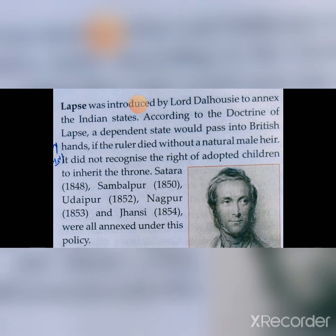Satara, Sambalpur, Udaipur, Nagpur, and Jhansi were all annexed under this policy. All these Indian states were annexed under the Doctrine of Lapse — they were added as part of British territory.